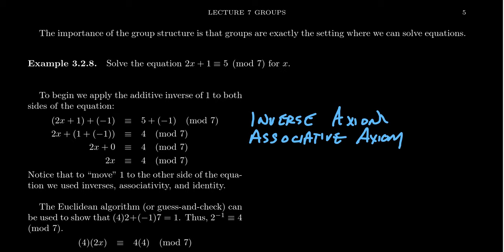1 plus negative 1, since negative 1 is the inverse, will give us a 0. And the significance of 0 is when you add 0 to anything, you'll get back that thing again. So the 2x plus 0 is just equal to 2x. And so this uses the identity axiom. And so notice, because we have inverses, associativity, and the identity axiom, we were able to, quote-unquote, move the 1.